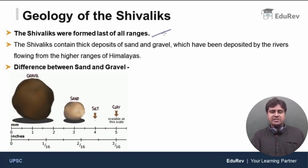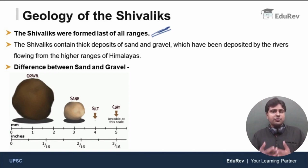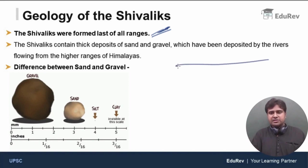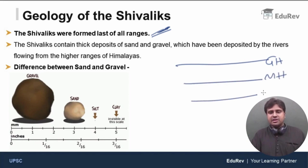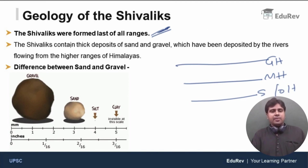Regarding the geology of the Shivaliks: the Shivaliks were formed last of all the ranges. This is a very, very important point. First, the Great Himalayas or Himadri formed. Next formed the Middle Himalayas. And then, last, the Shivaliks or the outer Himalayas. Kindly keep this in mind.